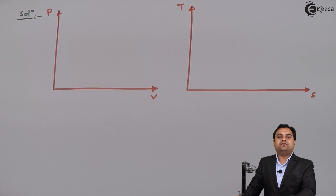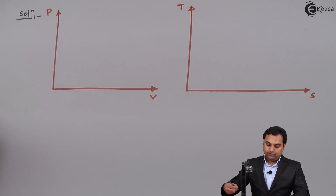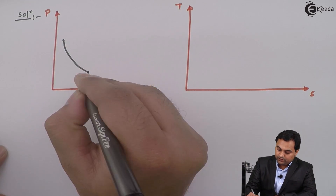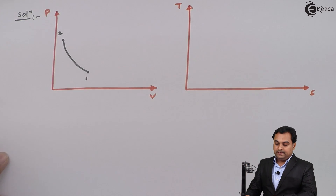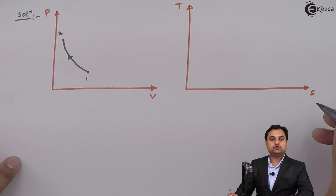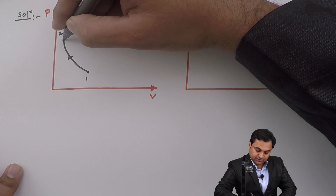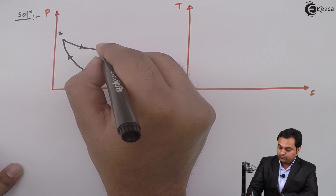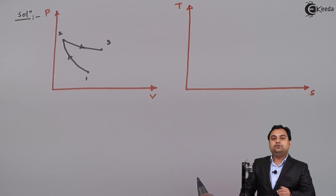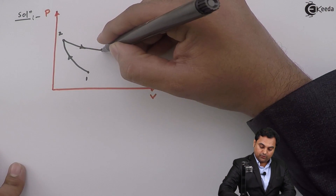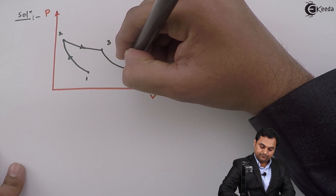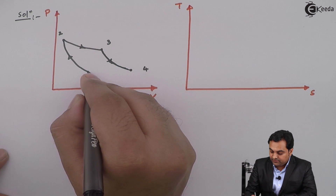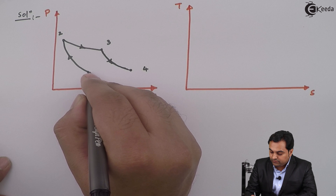On the PV diagram, the first process is isentropic compression, shown as a curve from point 1 to point 2. Next, process 2 to 3 is isothermal heat addition, shown as a curve at constant temperature. Then process 3 to 4 is isentropic expansion, again following a curve. Finally, process 4 to 1 is isothermal heat rejection at constant temperature.